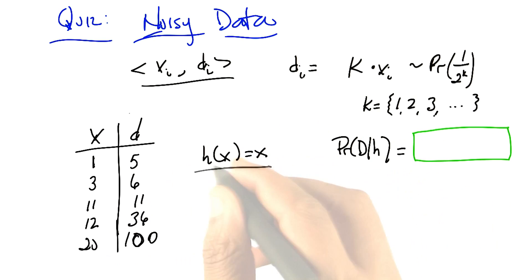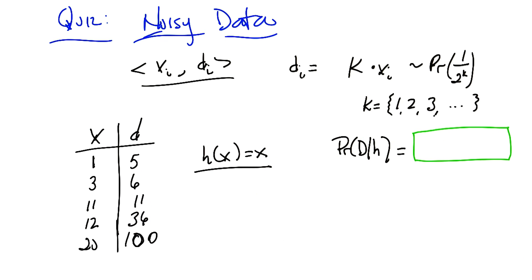Now I have a candidate hypothesis, h of x, which just returns x. That's kind of neat. So it's the identity function. So what I want you to do is to compute the probability of seeing this particular data set in a world where that hypothesis, the identity function, is in fact true. The identity function plus this noise process. Yes.